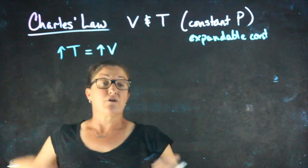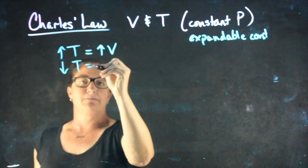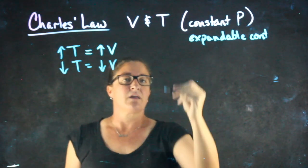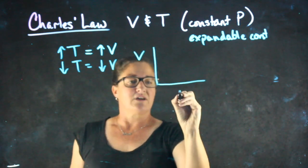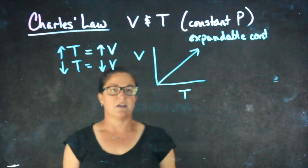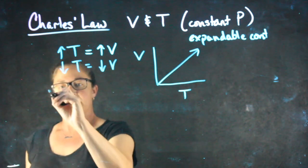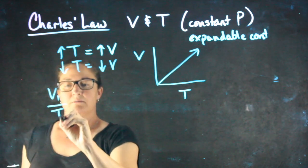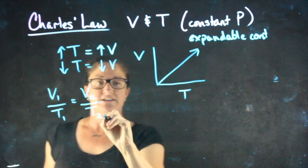When they both increase together or both decrease together, a decrease in temperature begets a decrease in volume, we have what's known as a direct relationship. And if I look at volume compared to temperature, we have an increase in a direct relationship like that. Another way we can express this is V1 over T1 equals V2 over T2.